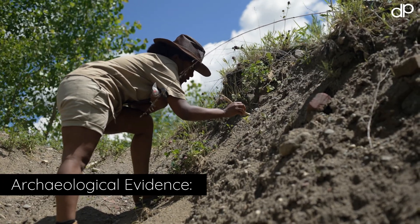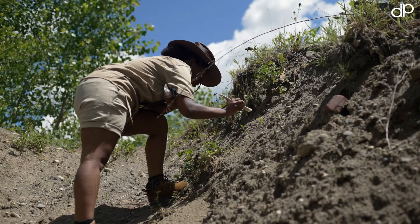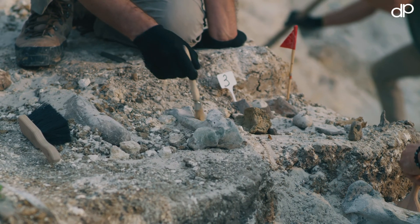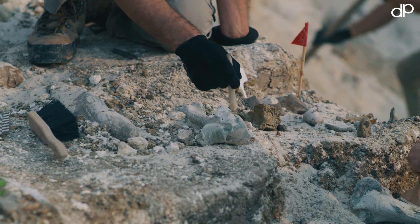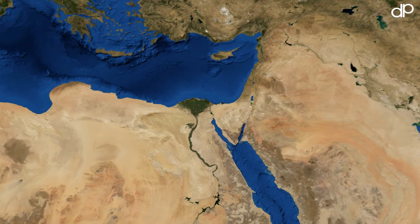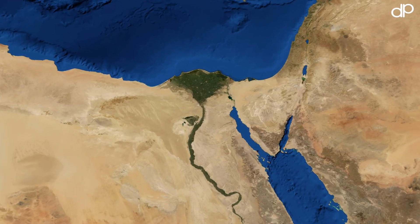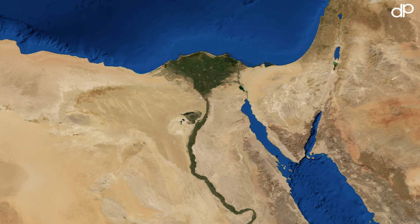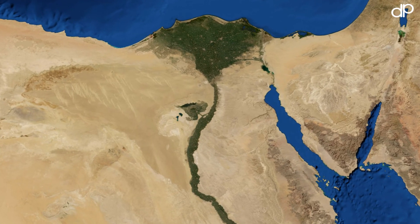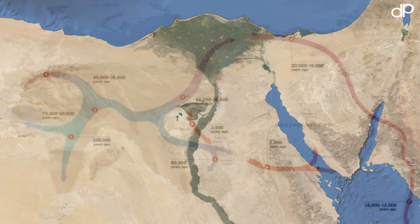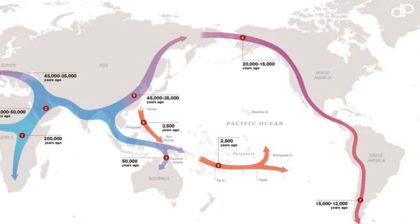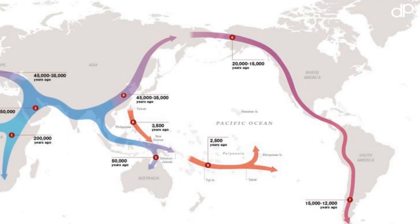Archaeological evidence has also played a significant role in supporting the Out of Africa Theory. Evidence of early human migration and colonization, such as tools and artifacts, has been found in different parts of the world, providing a timeline of early human migrations. The theory proposes that modern humans originated in Africa and later migrated to other parts of the world, a gradual process that took place over thousands of years, as early humans moved out of Africa and into different parts of the world.